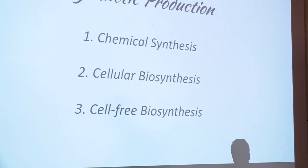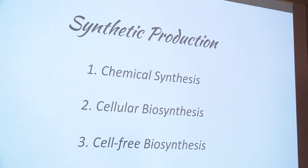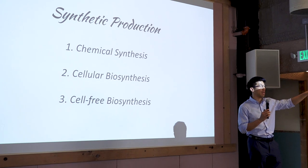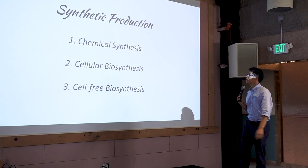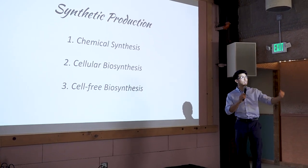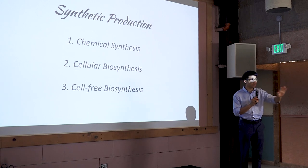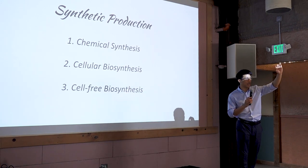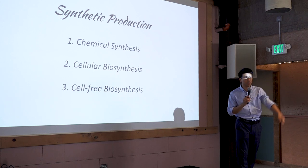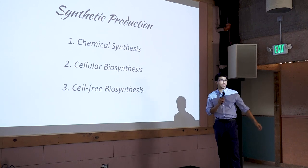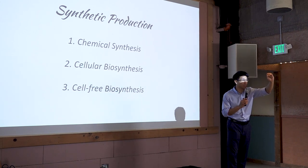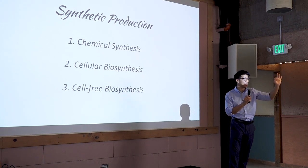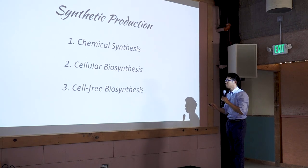Setting that aside for a second, let's talk about some of the chemical or synthetic processes — the non-cannabis plant processes — that you can make cannabinoids with. There's chemical synthesis, where you're building things in beakers and not using living systems. Then there's cellular biosynthesis, where you're genetically engineering cells to produce cannabinoids. Then there's cell-free biosynthesis, where you don't even need the cell — you don't need the whole city. You just want the one factory in that city that makes cannabinoids. I'll walk you through each one of these.